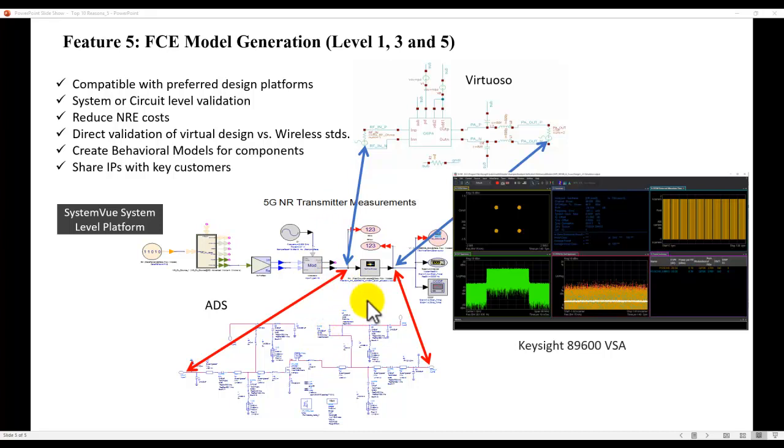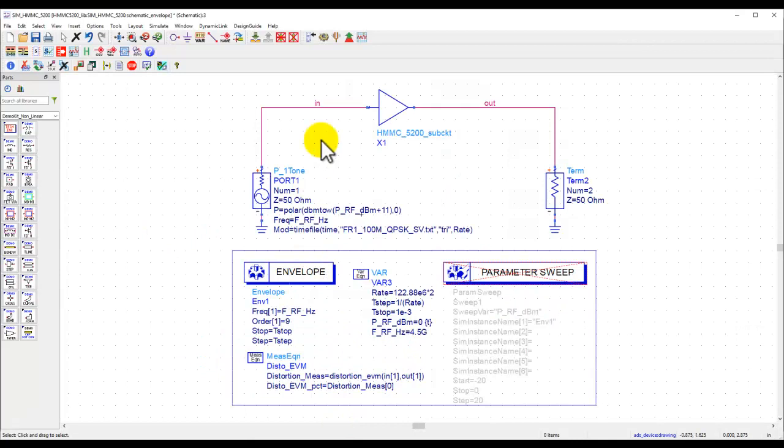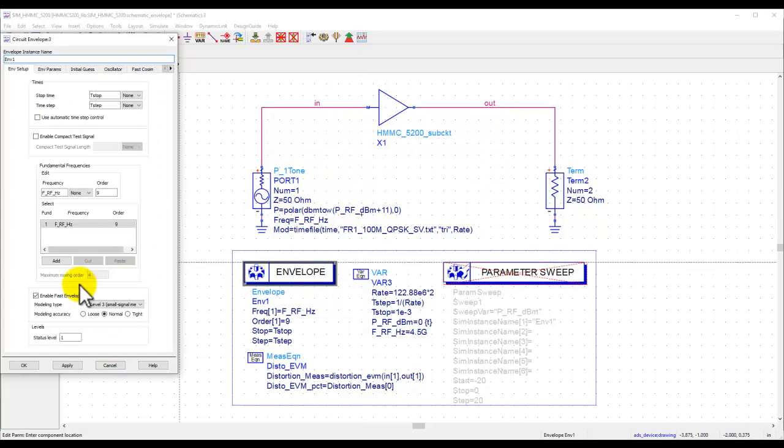So let's see how can we extract FCE model. It's actually very simple. You need to have an envelope-based simulation test bench. And inside envelope controller, you can enable fast envelope and select the right level for your modeling as depending upon your circuit as well as the bandwidth you are looking for.